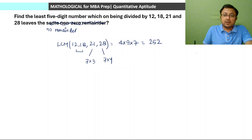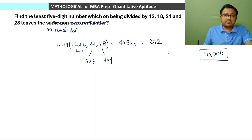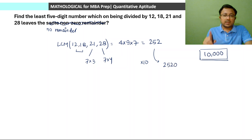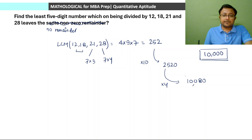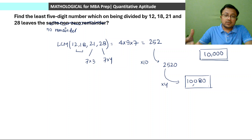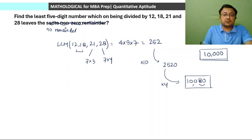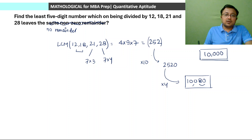We need to find the least 5-digit number, and the smallest 5-digit number is 10,000. Our purpose is to reach as close as possible to 10,000. Multiplying 252 by 40 gives 10,080, which leaves no remainder when divided by 12, 18, 21 and 28. How do we know this is the least 5-digit multiple? Because subtracting 252 from 10,080 gives a 4-digit number, not a 5-digit number.